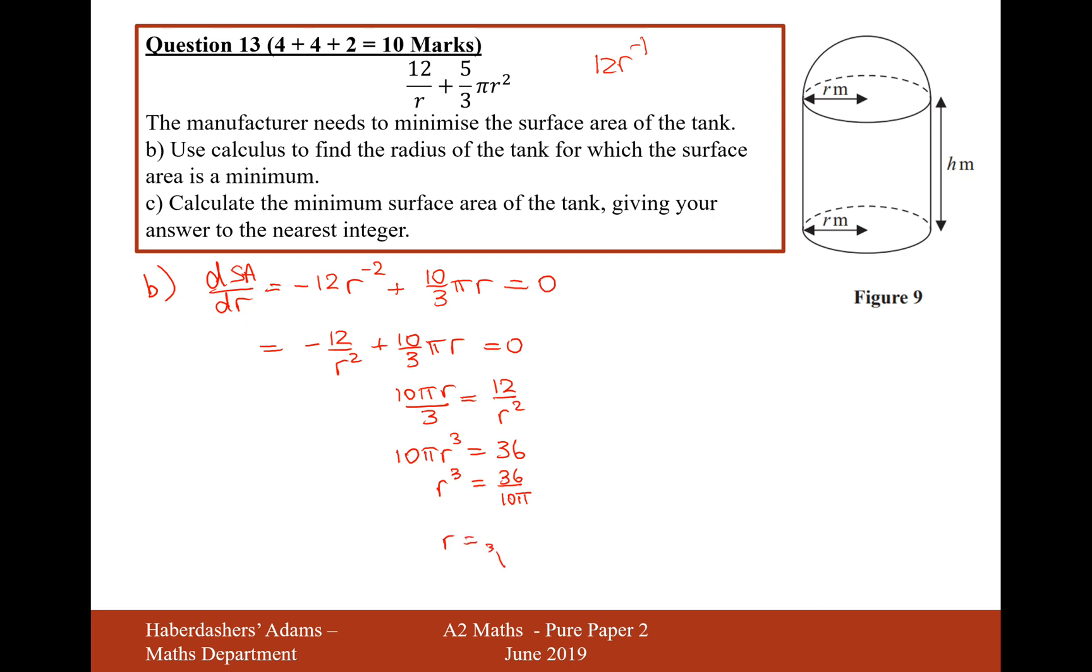And then cube root both sides. It's going to be the cube root of 36 over 10 pi. And when you grab your calculator, let's type that all into the calculator. You're going to get 1.05, 1.05 to three significant figures.